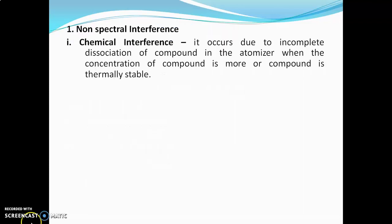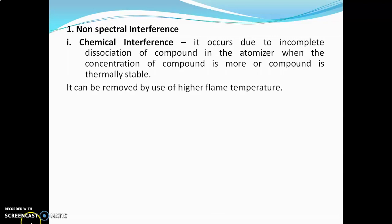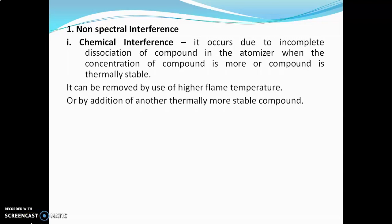Chemical interference occurs due to incomplete dissociation of a compound in the atomizer when the concentration of the compound is high or when the compound is thermally stable. It can be removed by using a higher flame temperature or by addition of another thermally more stable compound.